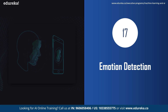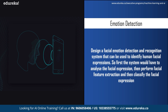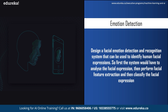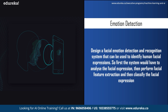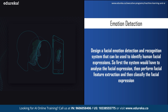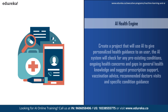The next AI project idea is emotion detection. Detecting human emotions is an area of great interest and investment among top companies. You can design a facial emotion detection and recognition system that identifies human facial expressions by analyzing the facial expression, performing facial feature extraction, and classifying the expression. For starters, design the system to identify just one expression — like happy or neutral — then enhance it to detect different emotions.